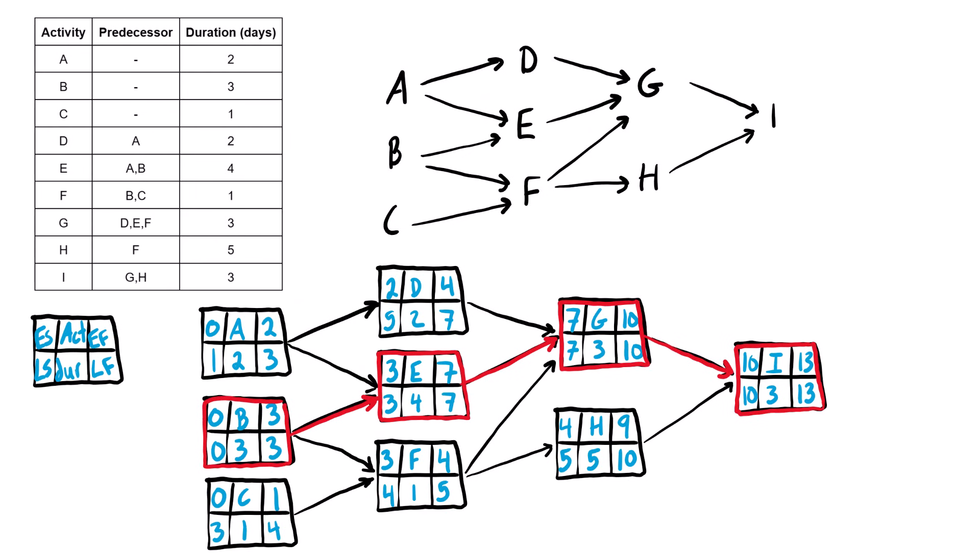Any activity on the critical path, if delayed at all, will delay the whole project. So if we delay B, E, G, or I by even just one day, the entire project will finish a day later. As long as everything goes as planned, we expect the project to finish at the end of day thirteen — so the project duration is 13 days. The other activities that are not on the critical path have some slack or float, and they can be delayed by a certain amount without delaying the project completion date.